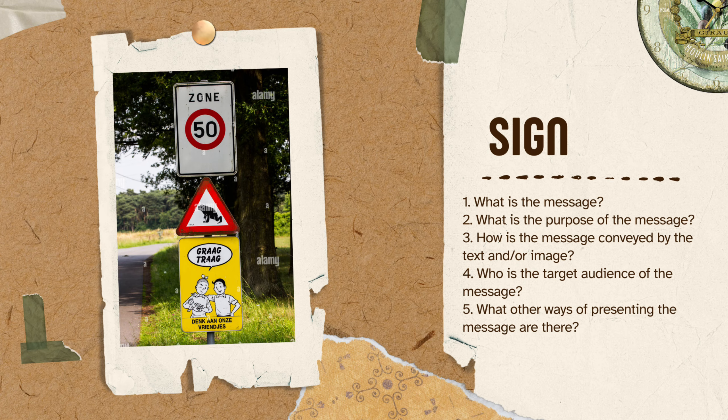The first picture shown in the video is a road sign that I found on Google Maps from Belgium. When translated, this sign says to slow down and be mindful of your friends. The term friends is referring to the crossing toads or the crossing frogs across the street.